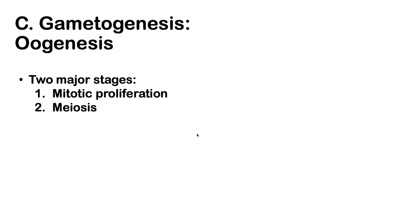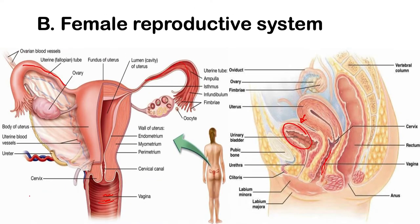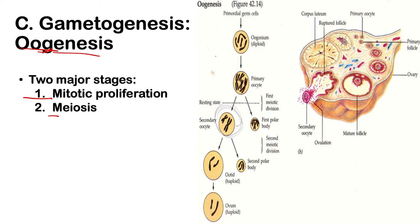Now we go to gametogenesis in the female, which is oogenesis — the formation of your oocyte. 'Genesis' means creation or formation, and 'oo' refers to oocyte. There are two major stages, similar to spermatogenesis: first, mitotic proliferation, and then meiosis, wherein haploid oocytes are produced. These processes occur in your ovary.